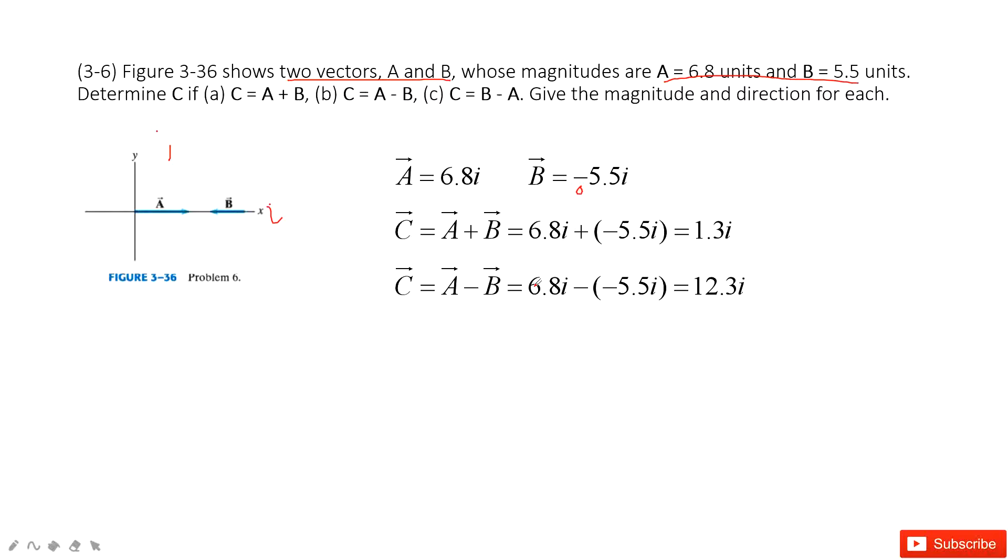Then A minus B. For this one we still need to take care of the negative sign. Minus a negative is plus, so we do the calculation for the x-component and get the result 12.3i.